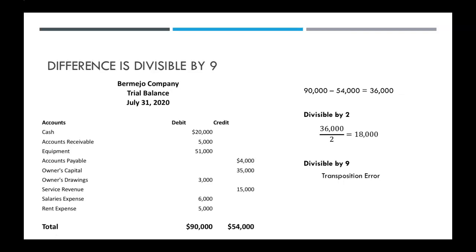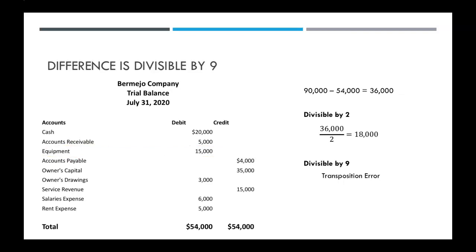You would check the 20,000 for cash, the 5,000 for accounts receivable, to make sure that you wrote the numbers down correctly on your trial balance. And while doing that, you realize that for equipment you made a transposition error. In your ledger it said 15,000, but on the trial balance you put 51,000 — you flipped the one and the five. So if we correct that and put 15,000 in for equipment, you can see that your total debits and your total credits equal once again.